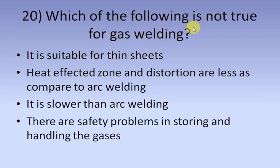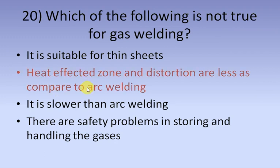Which of the following is not true for gas welding? Gas welding is suitable for thin sheets, and compared to arc welding it is slower. There are safety problems in storing and handling the gases. The statement that is not true for gas welding is: heat affected zones and distortions are less compared to arc welding.